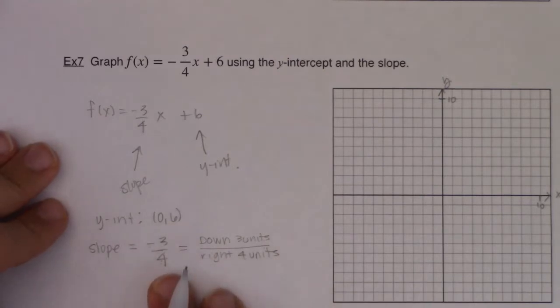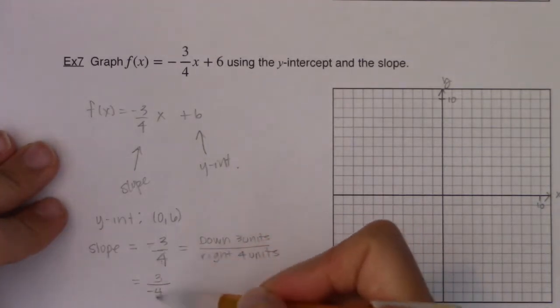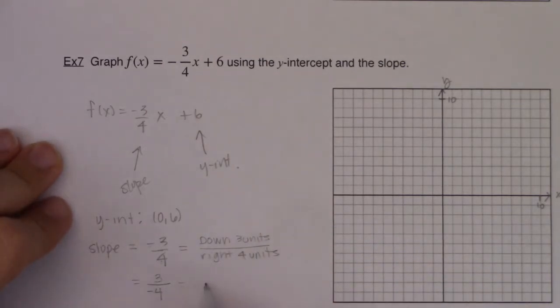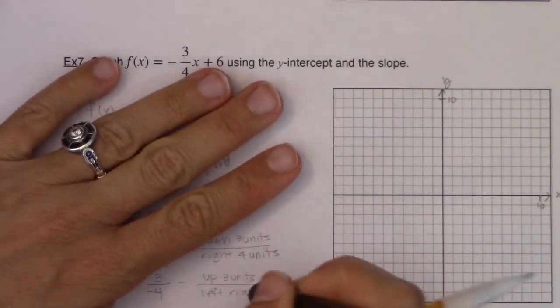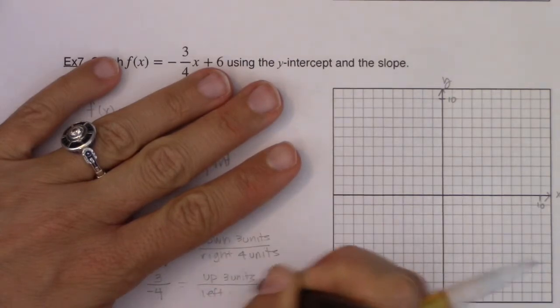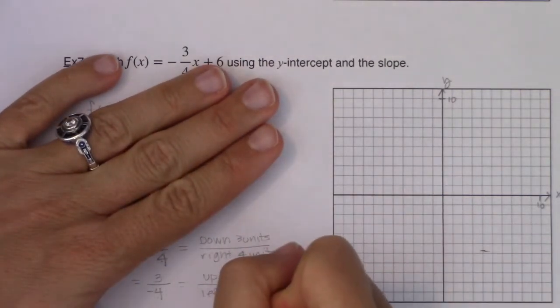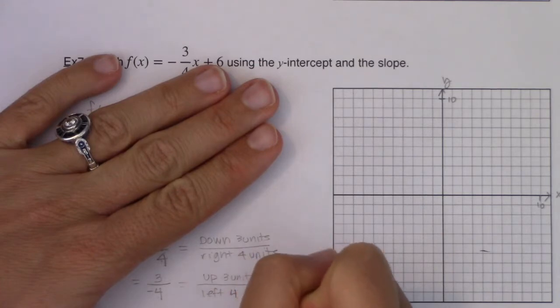If you had interpreted this fraction slightly different, if you had said this was three over negative four, which you could, that's an option. These two fractions are equivalent to each other. Then I wouldn't be moving down three units here. This would have been up three units. And this would have been left four units. I'll play both of these scenarios out in just a moment.